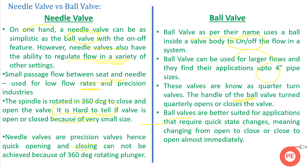Needle valves are precision valves, so quick opening and closing cannot be done because the handle must be rotated 360 degrees. Ball valves are used where quick opening or quick closing is required, since only a quarter turn of the handle is needed. Additionally, both needle valves and ball valves are used as root valves in instruments. However, in precision industries or complex systems where inaccurate instrument readings are unacceptable, needle valves are preferred. In normal or non-hazardous systems like water service, ball valves may serve as root valves.